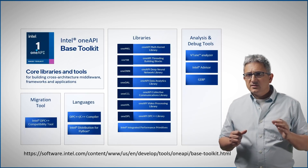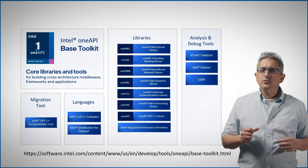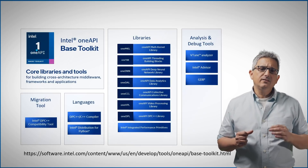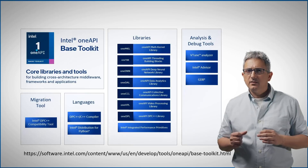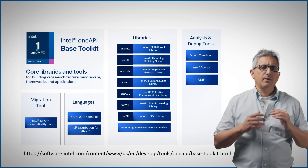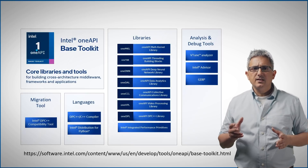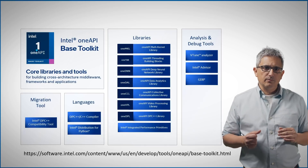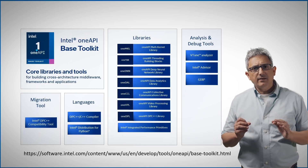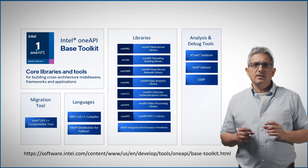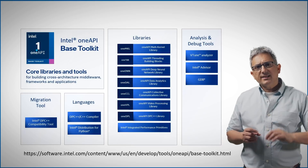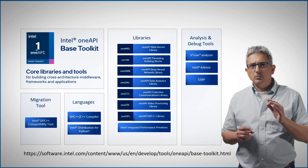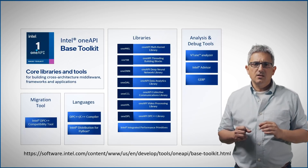The tools include Intel VTune Analyzer, Intel Advisor and the Intel distribution for GDB. Optimized C++, Data Parallel C++ and Python cross-architecture compilers are also available. Finally, the new Data Parallel C++ compatibility tool can help you migrate your existing CUDA code to Data Parallel C++.